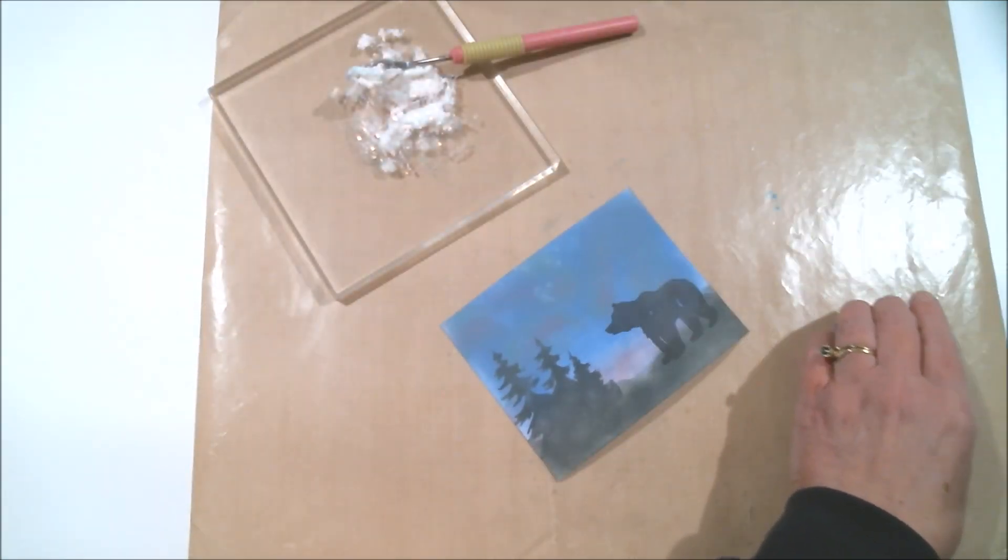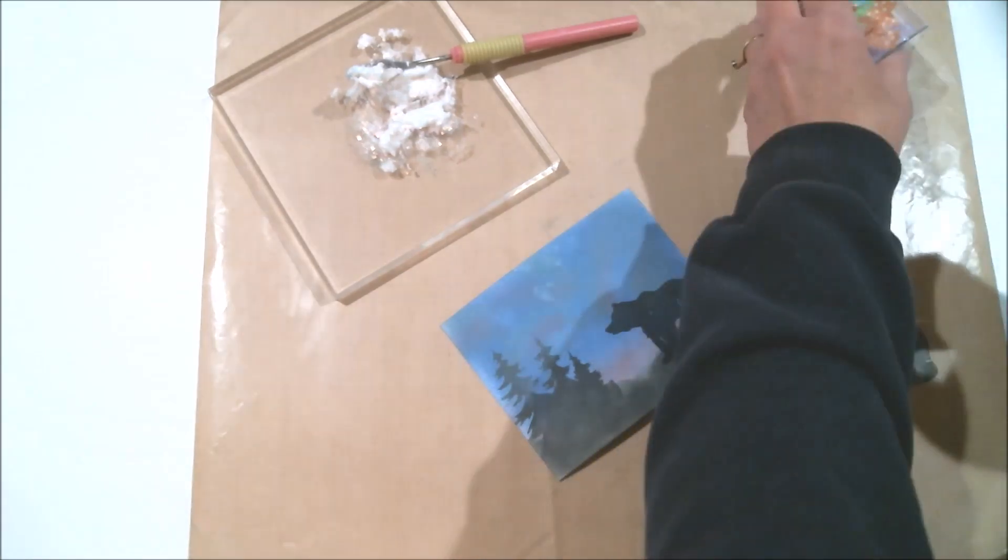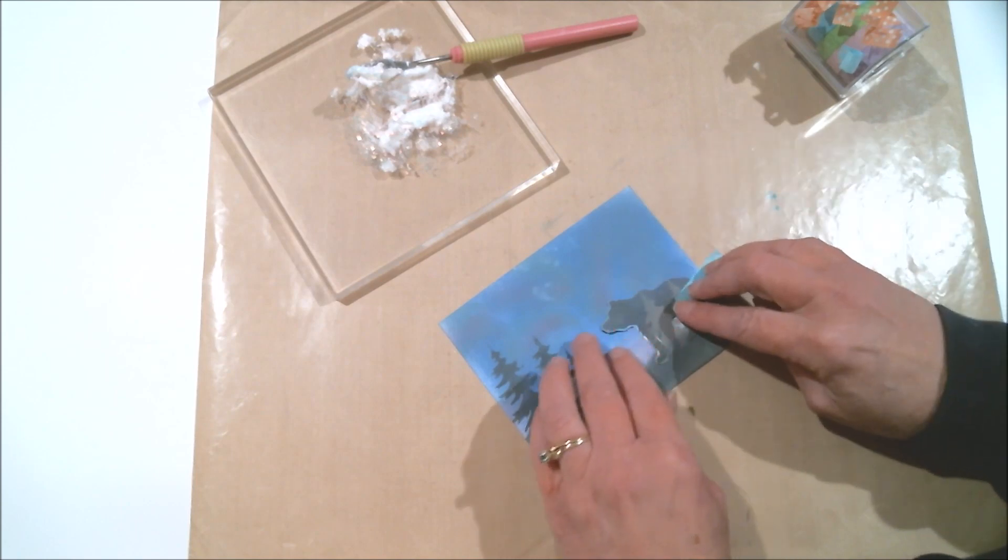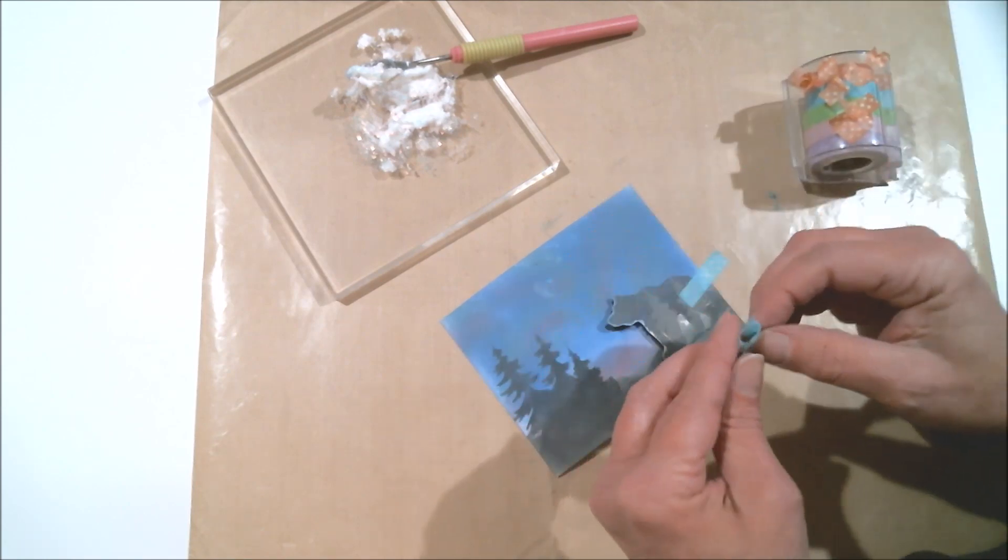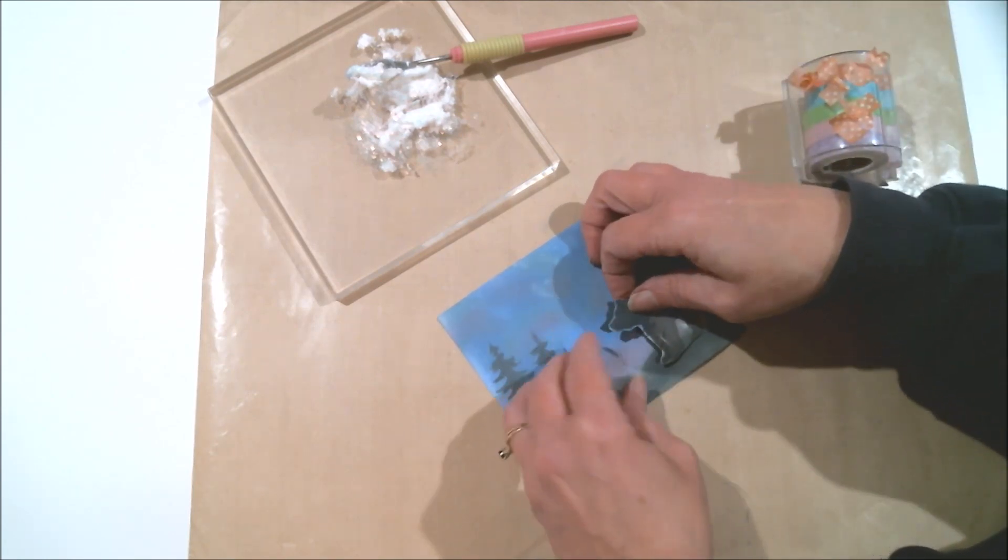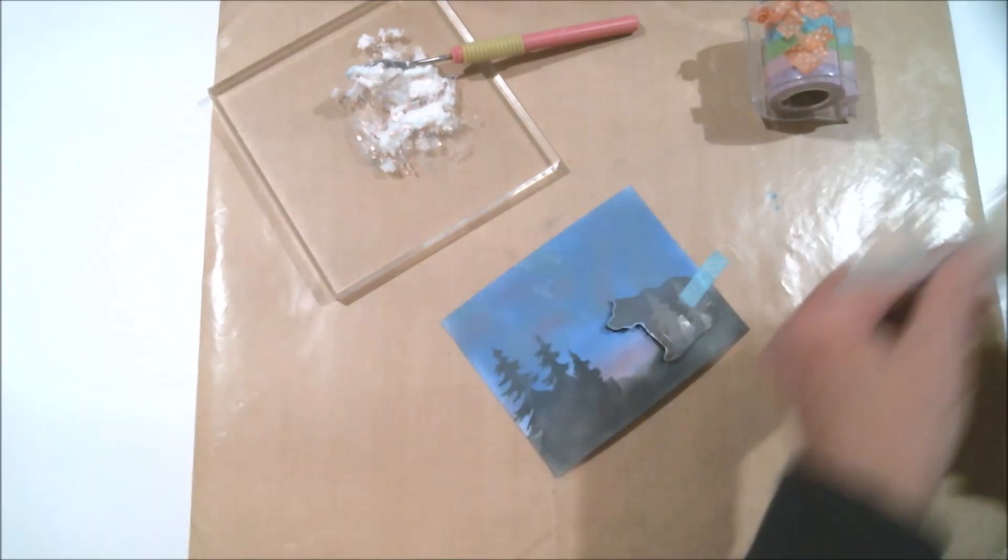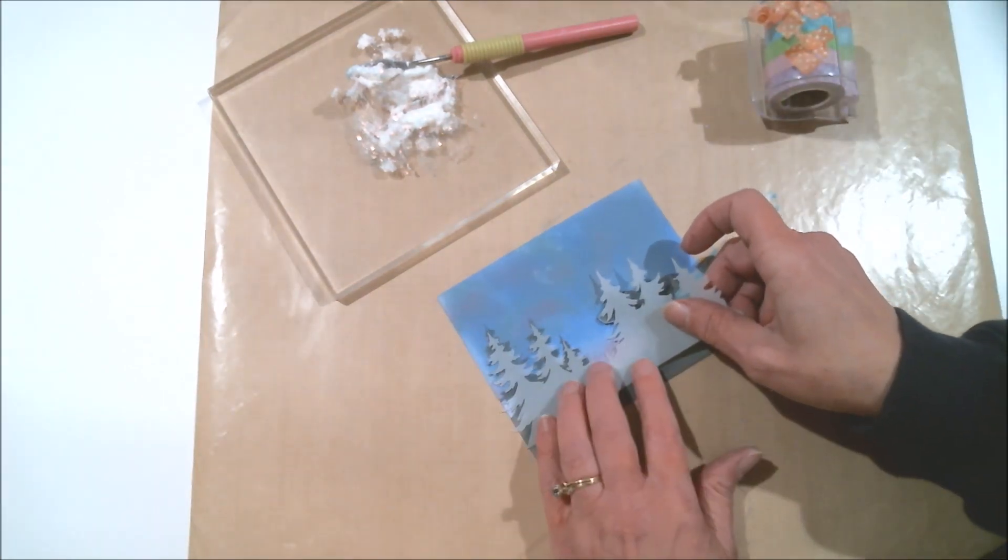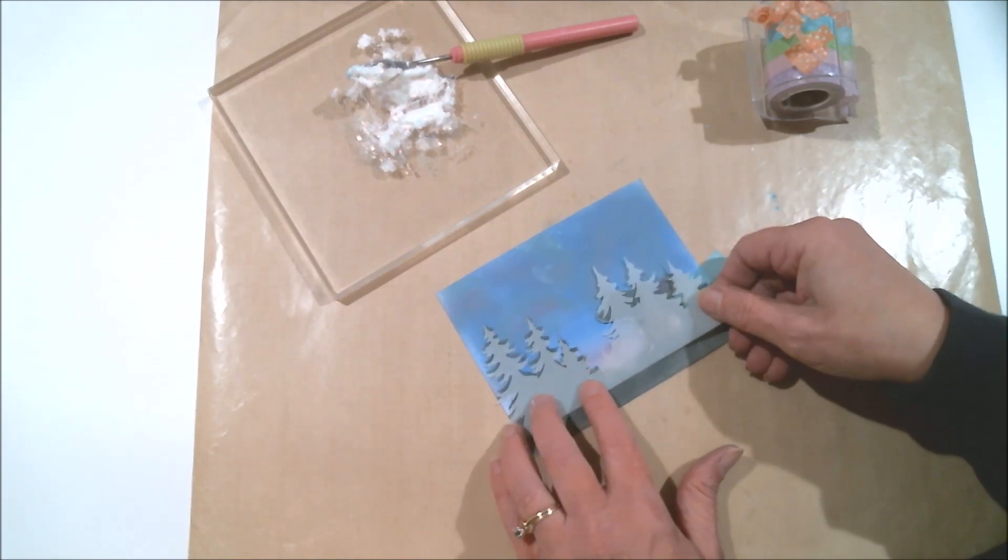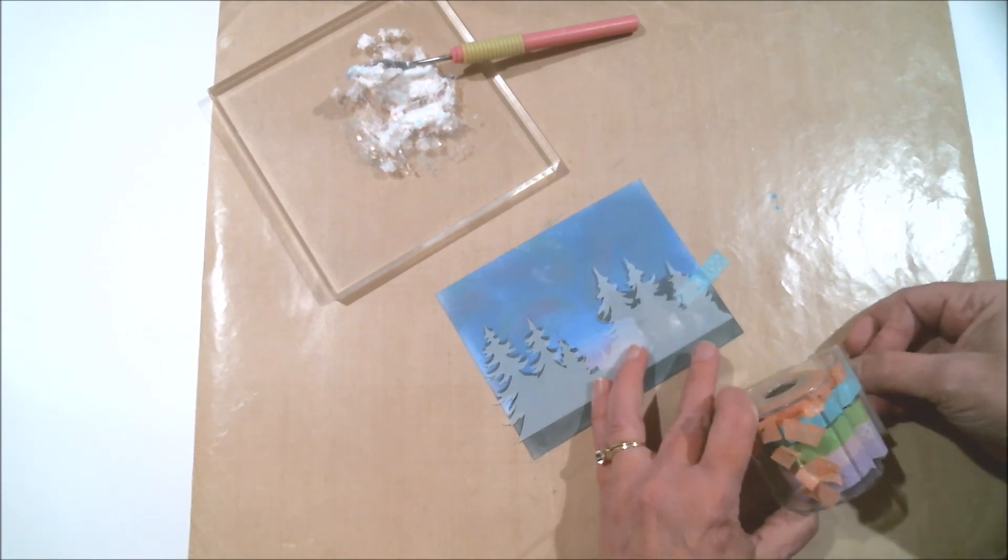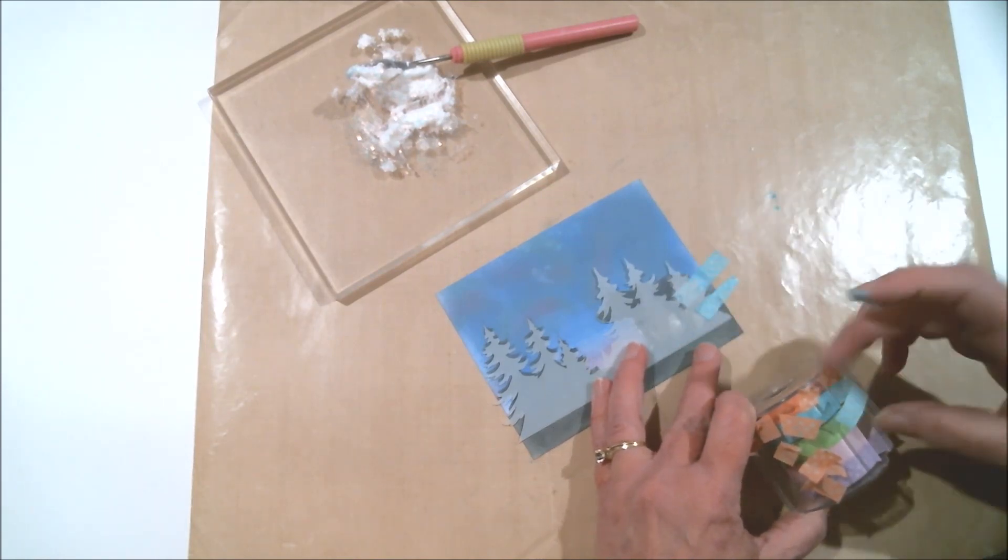But before I start my stenciling, I created a mask to cover the bear and I also use the inside piece that the tree stencil came with to cover up the trees. So when I'm stenciling the stars it won't get on the bear and the trees. And I just use my washi tape to hold everything in place. Washi tape just seems to come in handy for a lot of things, doesn't it?